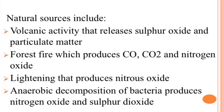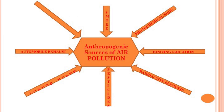Having talked about the various causes of air pollution, let us now talk about the various sources. Sources of air pollution can be both natural and manmade. Natural sources include volcanic activity that releases sulphur dioxide and particulate matter; forest fires which produce carbon monoxide, carbon dioxide, and nitrogen oxide; lightning that produces nitrous oxide; and anaerobic decomposition of bacteria which produces nitrogen oxide and sulphur dioxide. Manmade sources include photochemical smoke, ionizing radiation, radioactive elements, pesticides, heavy metals, and automobile exhausts.